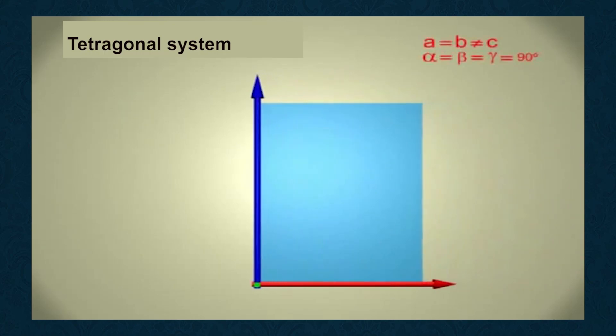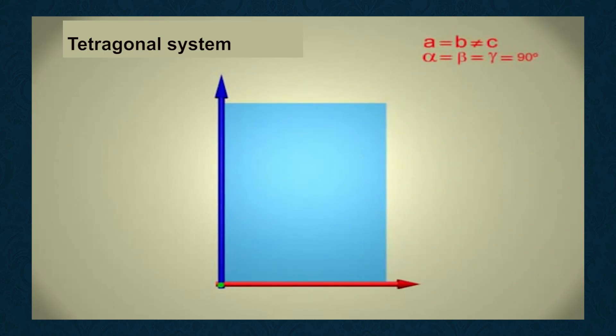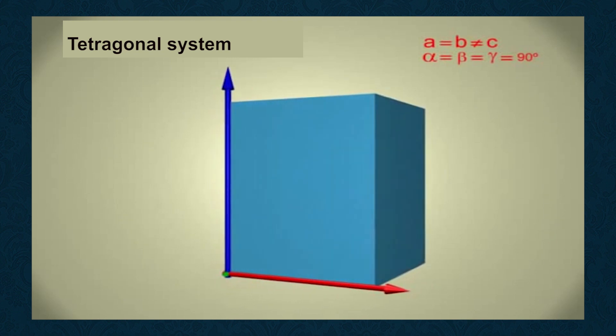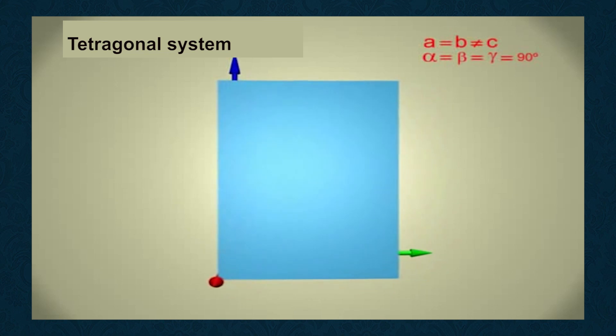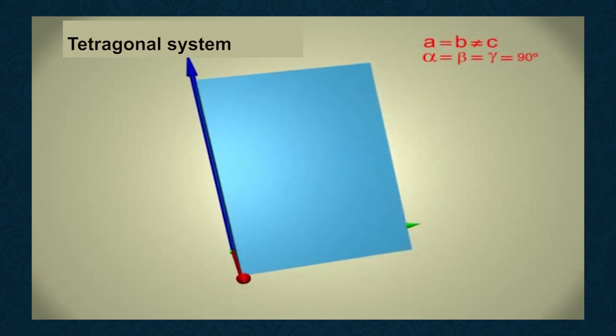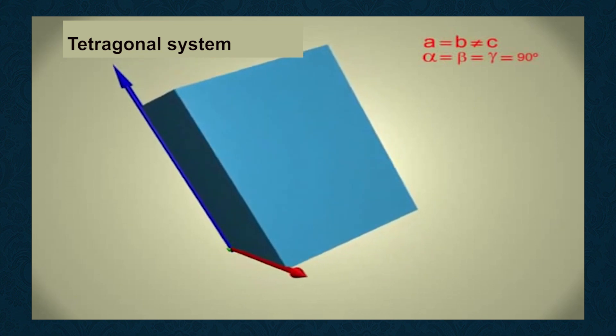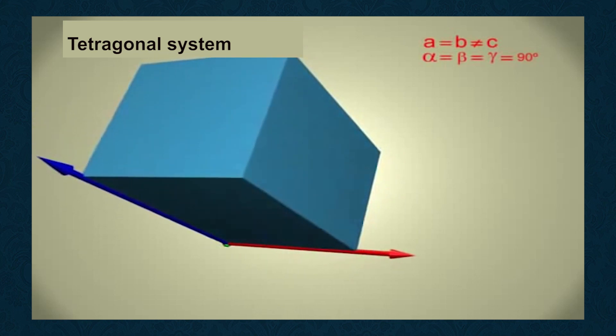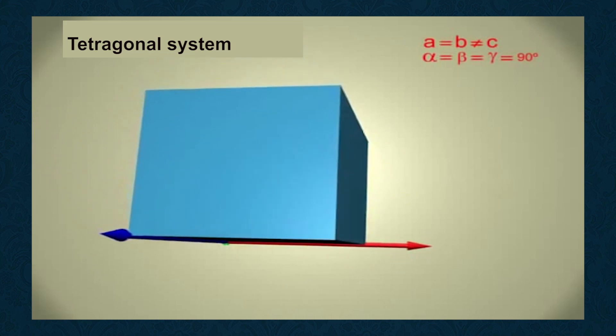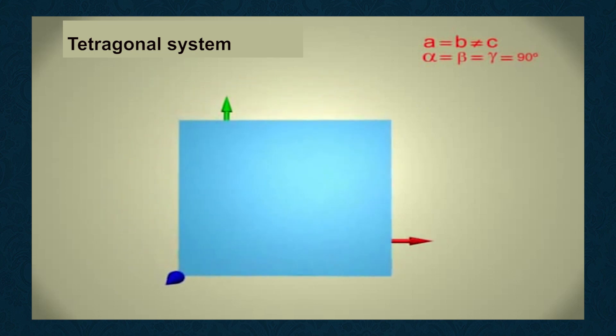Fifth, tetragonal system: Three mutually perpendicular axes, two of which are horizontal axes of equal length A1 and A2, but the vertical C axis is shorter or longer than the other two. Alpha = beta = gamma = 90 degrees, A = B ≠ C, where A = A1 and B = A2.